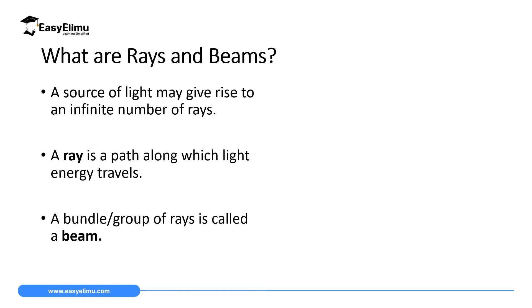Now what is a ray and what is a beam and how are they different? A ray is a path along which light energy travels. So if you have light energy from the source, the path which it will follow for it to reach the other end is what we call a ray. Sources of light — either luminous or non-luminous — give so many rays, which we call infinite, meaning you cannot be able to count them.